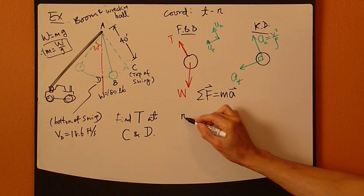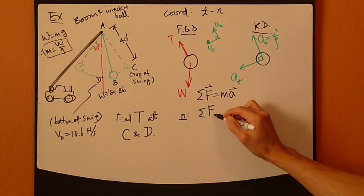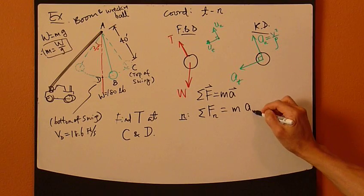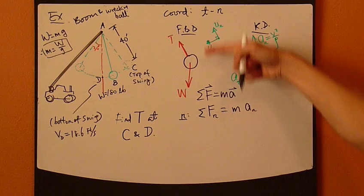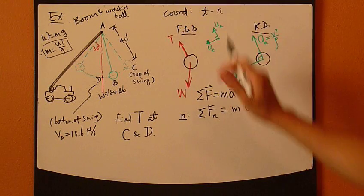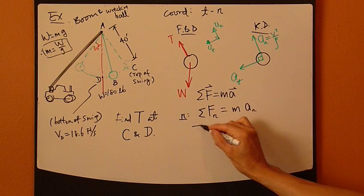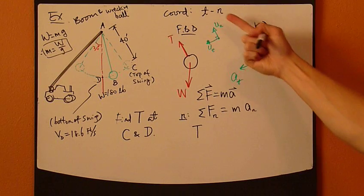Un, and Ut is this way at this position B. So, we only need to consider the normal direction before we solve for the tension. So, the normal direction. So, sum of forces in the normal direction equals Man. So, left-hand side, just look at a free body diagram. Extract all the forces in the normal direction. So, now, we have T, positive T, because T already points upward, same direction as the Un direction.